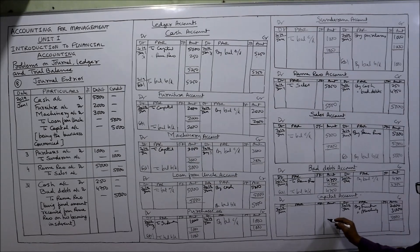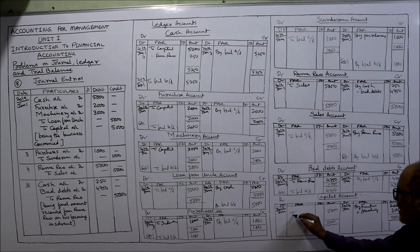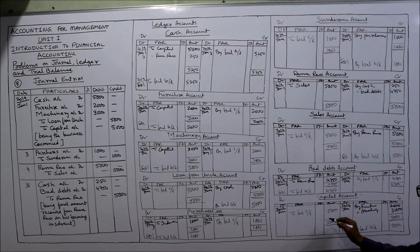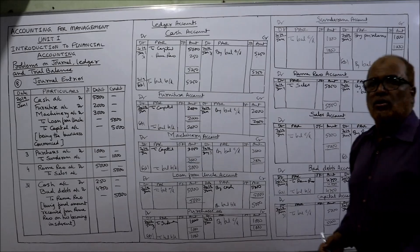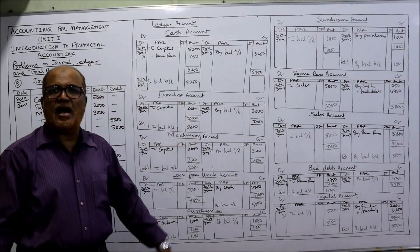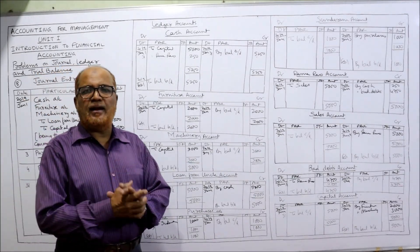Capital account: credit side 5000. Balance carried down 5000, balance brought down 5000. This is January 31st closing and February 1st opening. That's all — we have completed the journal entries as well as all ledger accounts.